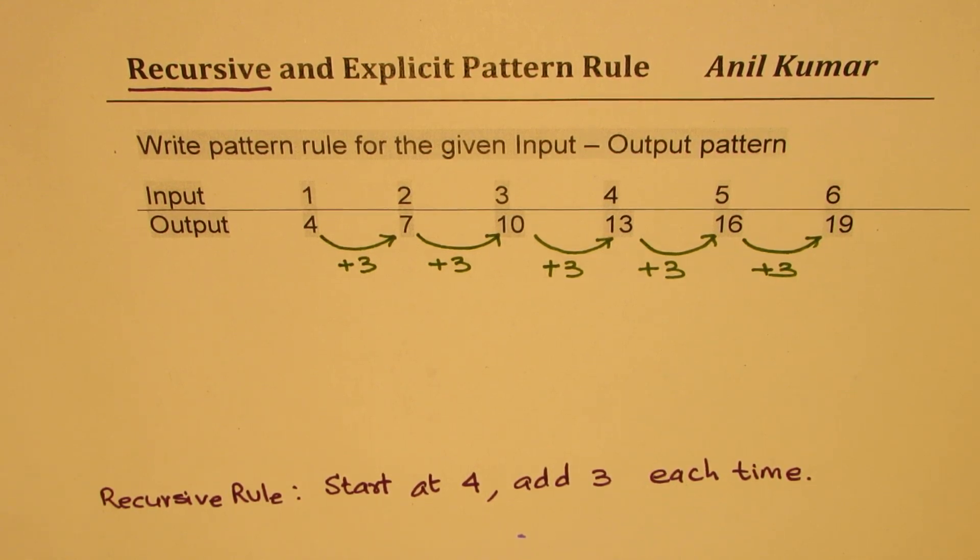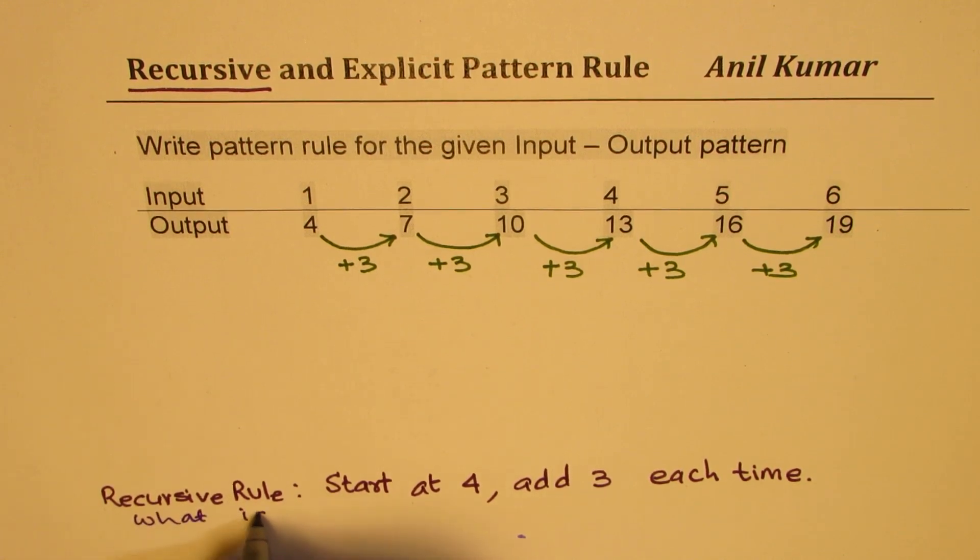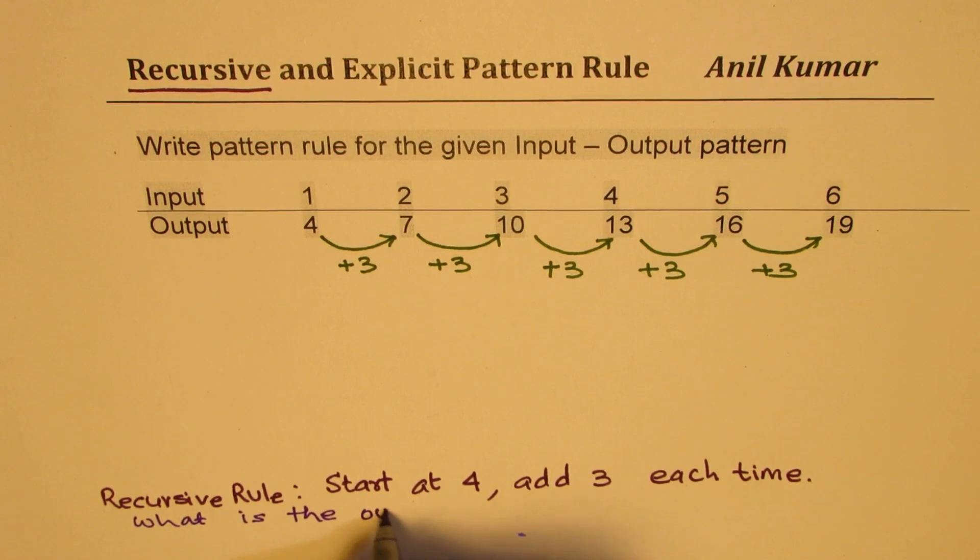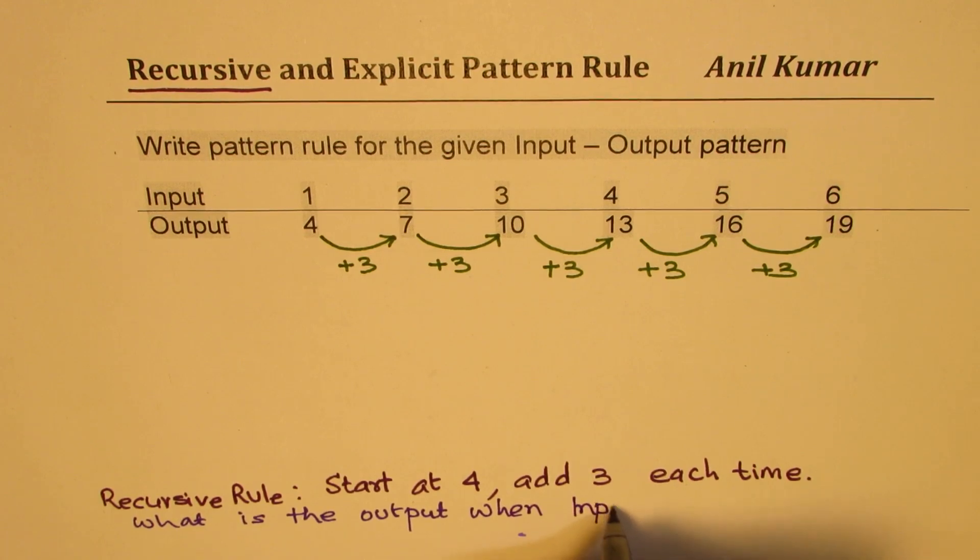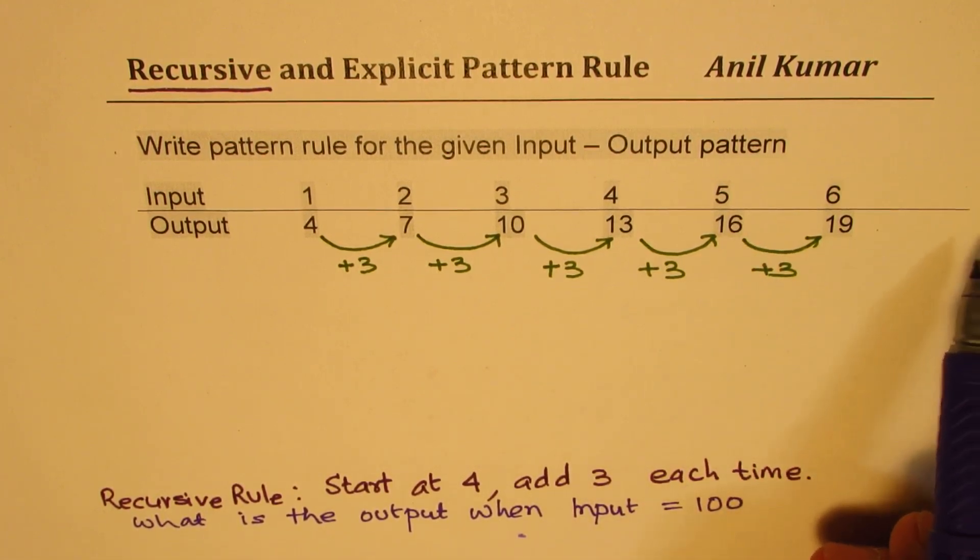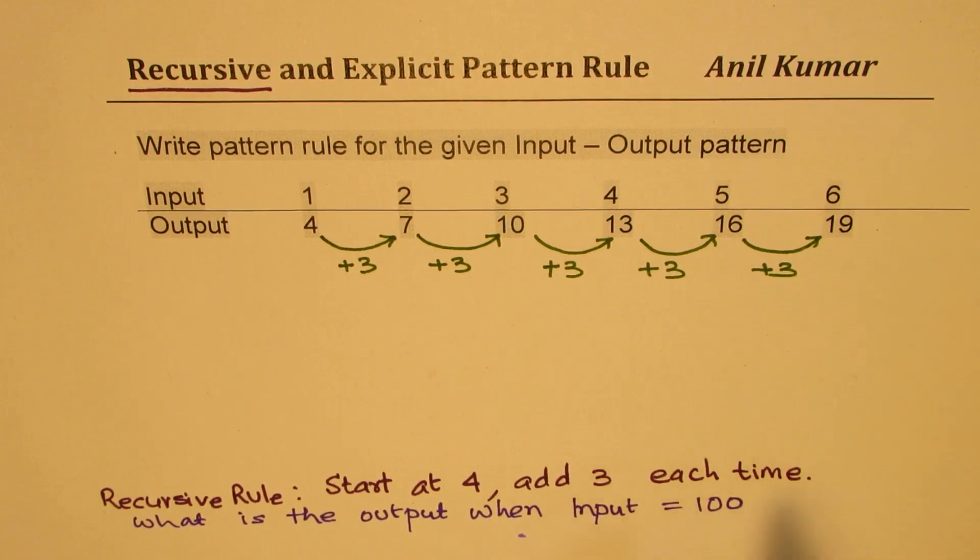Now if you use recursive rule then we have a problem. So that is if we want to know what is the output when input equals 100. Now that really means that you have to add this 3 ninety-nine times to get to 100. That will take a lot of time and effort.